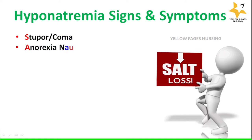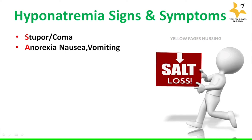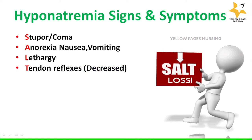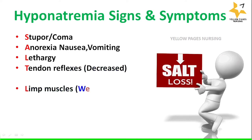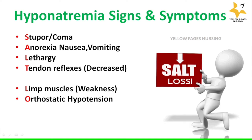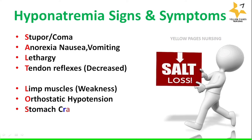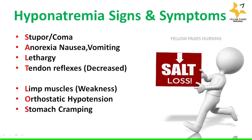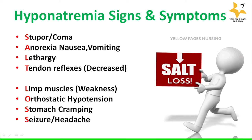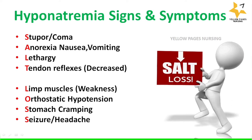Let's look into the clinical manifestations of hyponatremia. Signs and symptoms include stupor or coma — stupor being a state of near unconsciousness or insensibility. Other symptoms include anorexia, nausea, vomiting, lethargy, decreased tendon reflexes, and limb muscle weakness. Orthostatic hypotension, stomach cramping, and headache may also occur. All these signs and symptoms can be grouped under the mnemonic SALT LOSS for easy remembrance.